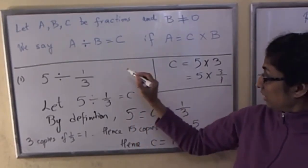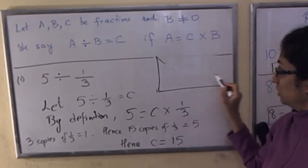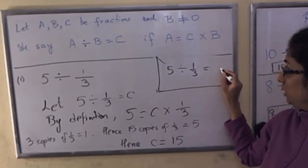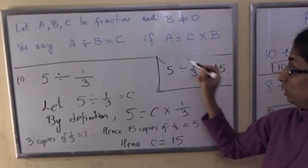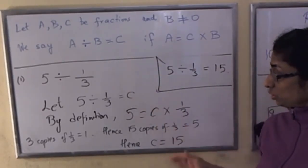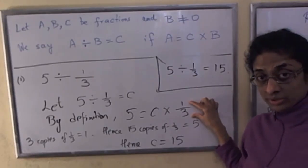And if you like, then you can go back and you can write a conclusion. 5 divided by 1 third equals 15. If you like, you may also sketch the number line to show this argument, how 3 copies of 1 third equals 1 and so on. Thank you.